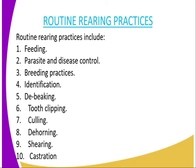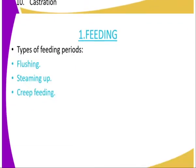The various routine rearing practices include the following: number 1, feeding; number 2, parasite and disease control; number 3, breeding practices; number 4, identification; number 5, de-beaking; number 6, tooth clipping; number 7, culling; number 9, shearing; number 10, castration.